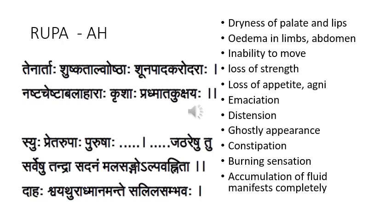Now we come to the samanya lakshanas of udara. According to Ashtangahridaya, the person suffering from udara has shushka thalu oshta — dryness of palate and lips. Then shunapadhakarvadhara — shunatha is edema in padhakara and udara, that is the upper limb, lower limb, and abdomen. Nashta cheshta — weakness and inability to move body parts. Nashta bala — loss of strength. Nashta ahara — loss of appetite. Krisha — emaciation.